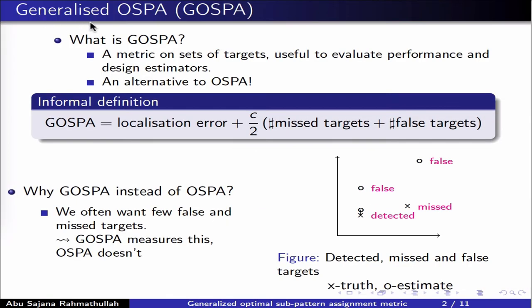The Generalized Optimal Subpattern Assignment Metric, or GASPA for short, is a metric on sets. That is, GASPA measures distances between sets of vectors. Such metrics are important in order to evaluate the performance of, for instance, a multi-target tracking algorithm.